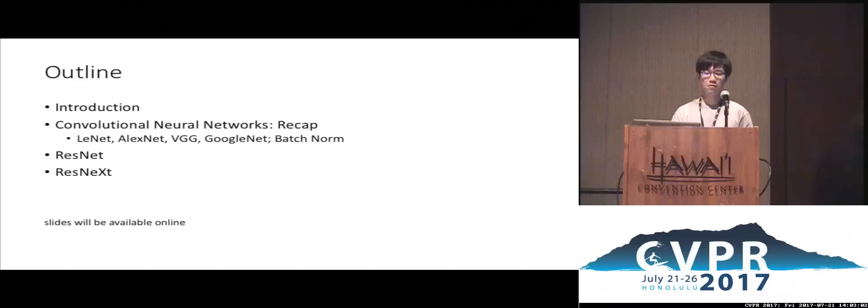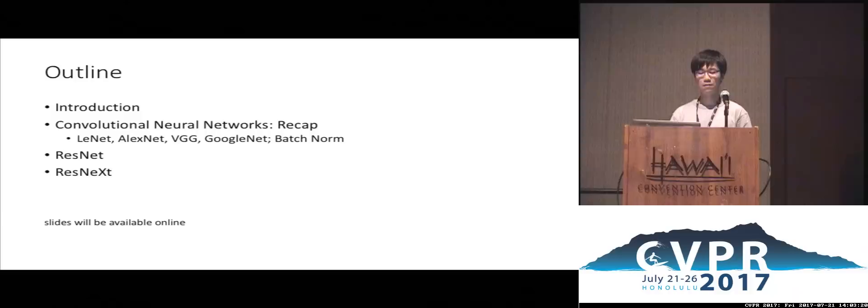In this talk, I will first give some introduction about image recognition and image classification. Then I will review convolutional neural networks, starting from LeNet to AlexNet, VGG, and GoogleNet. Then I will give a review of ResNet and an introduction of our recent work on ResNext, which will be presented at this CVPR. The slides of this tutorial will be available online after this tutorial.